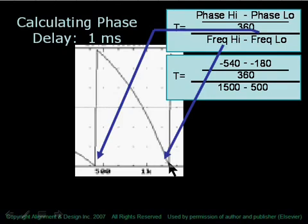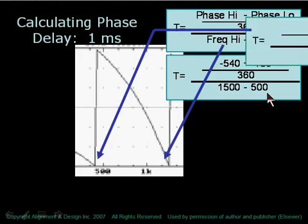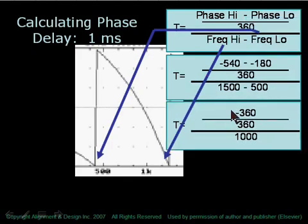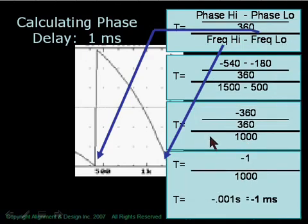For a total span of 360 degrees between those two points. So for a 1000 Hz span, we have 360, or one wavelength, of change. 360 divides out, and you end up with 1 over 1000. It's a negative one since it's delay, which translates to 1 millisecond of delay.